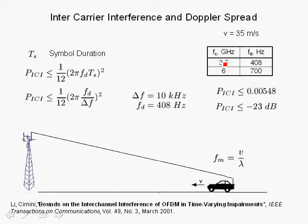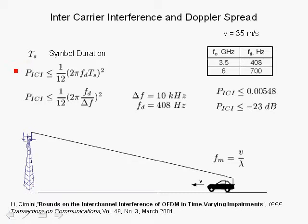Looking at the table, we show the carrier frequency in gigahertz and the computed maximum Doppler shift in hertz, given a vehicle speed of 35 meters per second, which is about 126 kilometers per hour. For a carrier frequency of 3.5 gigahertz, the maximum Doppler shift is 408 hertz. As carrier frequency increases, the maximum Doppler shift reaches 700 hertz. A very important paper entitled 'The Bounds on the Inter-Channel Interference of OFDM and Time-Varying Impairments,' published in March 2001, calculated the upper bounds for intercarrier interference power due to Doppler shift in a mobile fading channel.